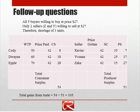For the first question, what happens at a price of $27? All five of our buyers are willing to buy, but we only have two willing sellers, so we would have a shortage. For the second question, what happens with consumer and producer surplus at a price of $42? Here are our willing buyers. We calculate their consumer surplus as their willingness to pay minus what they did pay, and then we add up all their consumer surplus to get $54 of consumer surplus.